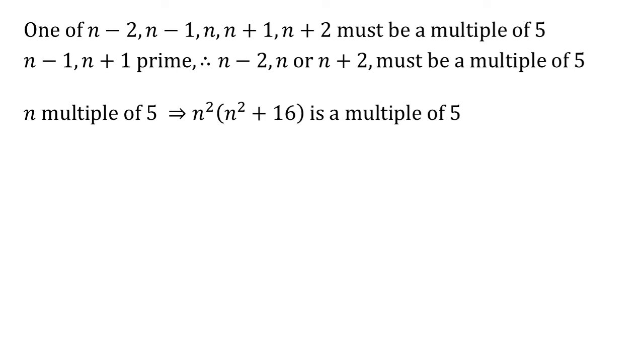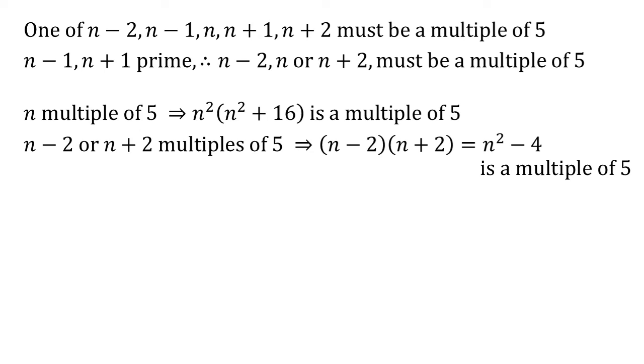The other case is if the multiple of 5 is either n minus 2 or n plus 2. Well if we multiply them together, n minus 2 times n plus 2, because one of them is a multiple of 5, multiplying them together will give a multiple of 5, but those brackets simplify to n squared minus 4.